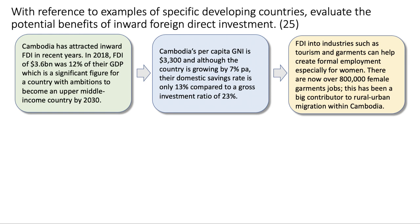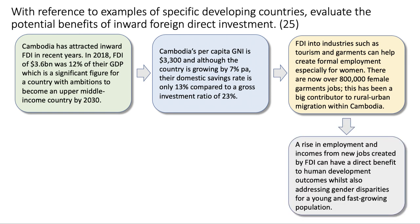FDI into Cambodian industries such as tourism and garments can help create formal employment — more jobs, especially for women. There are now over 800,000 female garment jobs in Cambodia, and this has been a big factor behind rural-urban migration within the country. I've done my country profile on Cambodia — there's actually a 15-minute video on YouTube. That contextual awareness allows me to build a great point in the exam. The rise in employment and incomes from new jobs created by FDI can have a direct benefit to human development outcomes, whilst also addressing significant gender disparities for a young, fast-growing population.